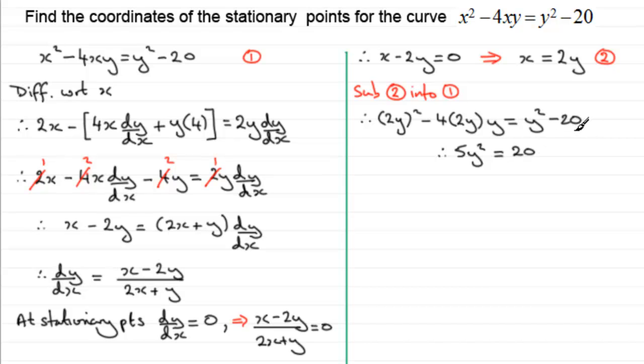So just check that rearrangement. And then divide both sides by 5. And we therefore have y squared equals 4. And that's going to lead on to y equaling the square root of 4, which will be plus or minus 2.